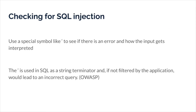Let's talk about how to check if a web application is vulnerable to SQL injection. You can use a special symbol like the apostrophe to see if there is an error and how the input gets interpreted. The apostrophe is used in SQL as a string terminator, and if it's not filtered by the application, it would lead to an incorrect query and produce some sort of error message. If we get an error message, that means the web application is interpreting that apostrophe as code when it should be filtered — indicating a potential SQL vulnerability that can be further exploited.